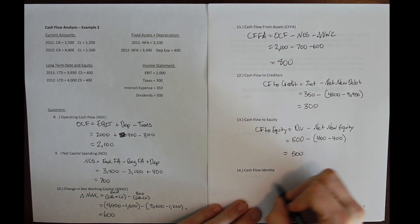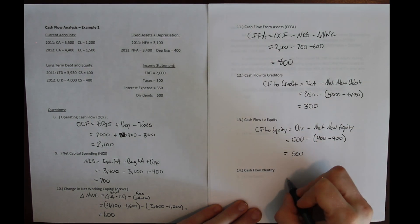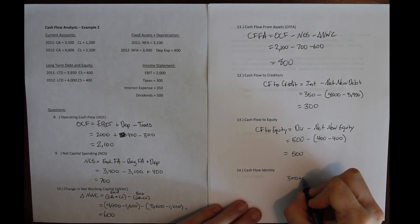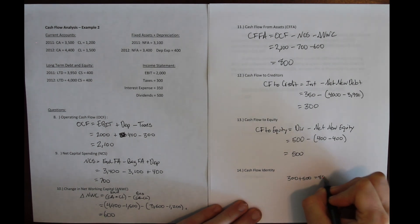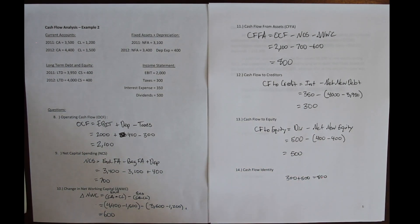All right, so it's pretty easy here to see that the identity holds because cash flow from assets from the investment perspective is 300 plus 500 which is 800, and so we see that the identity holds here.